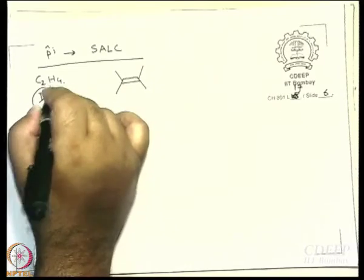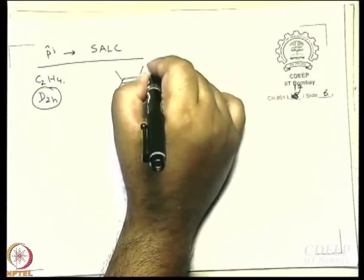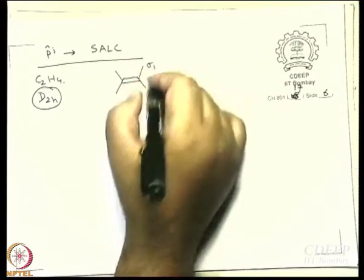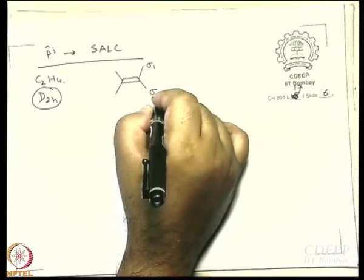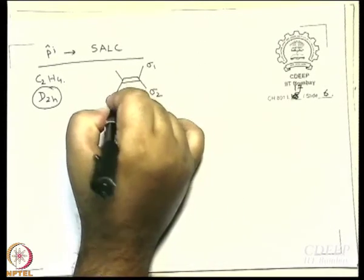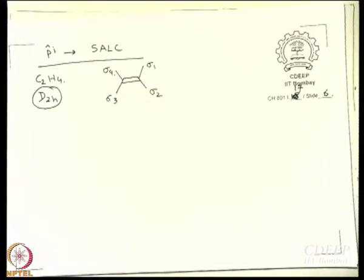This is our exercise in symmetry point group. What I can say is I can call this s orbital on hydrogen atom sigma 1, the s orbital of this hydrogen atom sigma 2, this is sigma 3, and this is sigma 4.